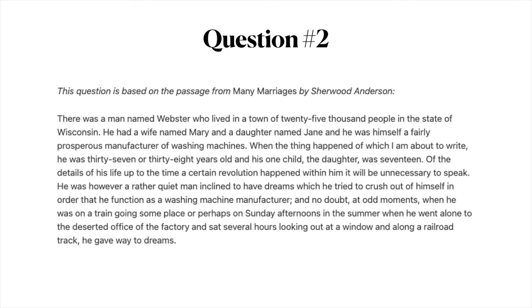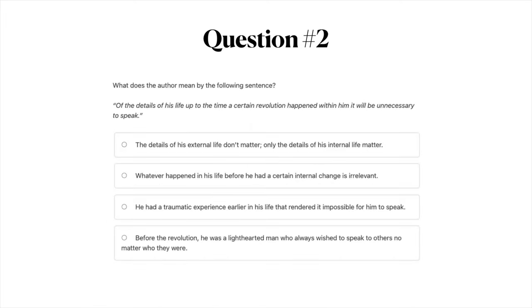Question number two. Go ahead and pause the video to read this passage. What does the author mean by the sentence: 'Of the details of his life up to the time a certain revolution happened within him, it will be unnecessary to speak.' A: the details of his external life don't matter, only the details of his internal life matter; B: whatever happened in his life before he had a certain internal change is irrelevant; C: he had a traumatic experience that rendered it impossible for him to speak; or D: before the revolution he was a light-hearted man who always wished to speak to others.